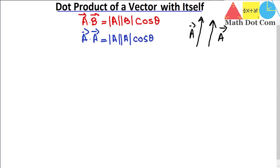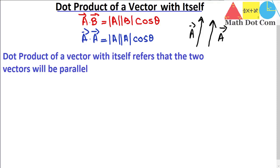One important thing here: if we are taking only one vector and duplicating it, it means both vectors are in the same direction. So it is obvious that the angle between them will be zero degrees. The dot product of a vector with itself means the two vectors are parallel, and the angle between them is zero degrees.